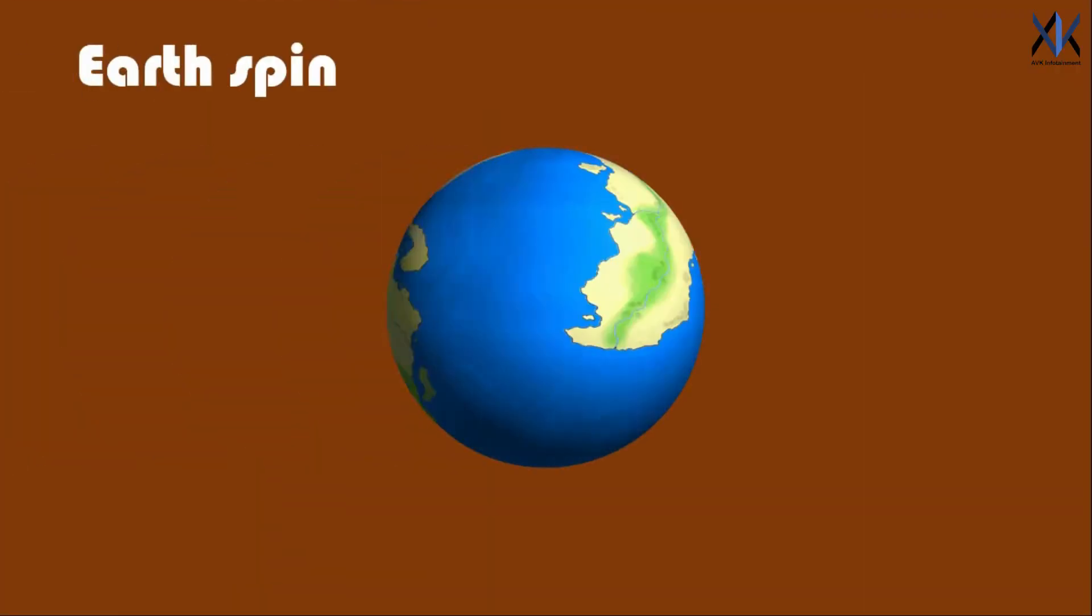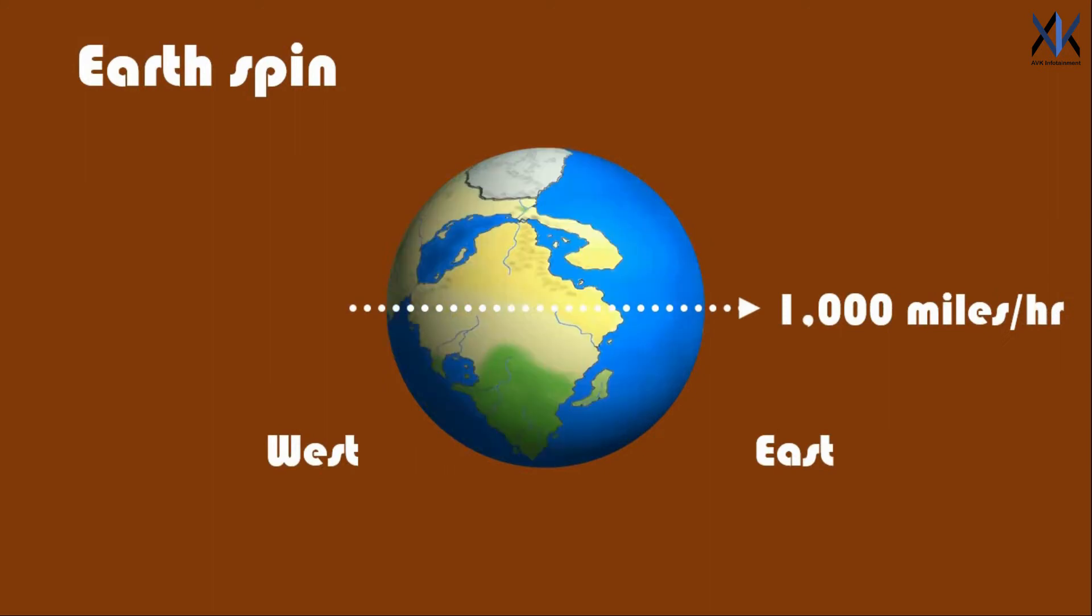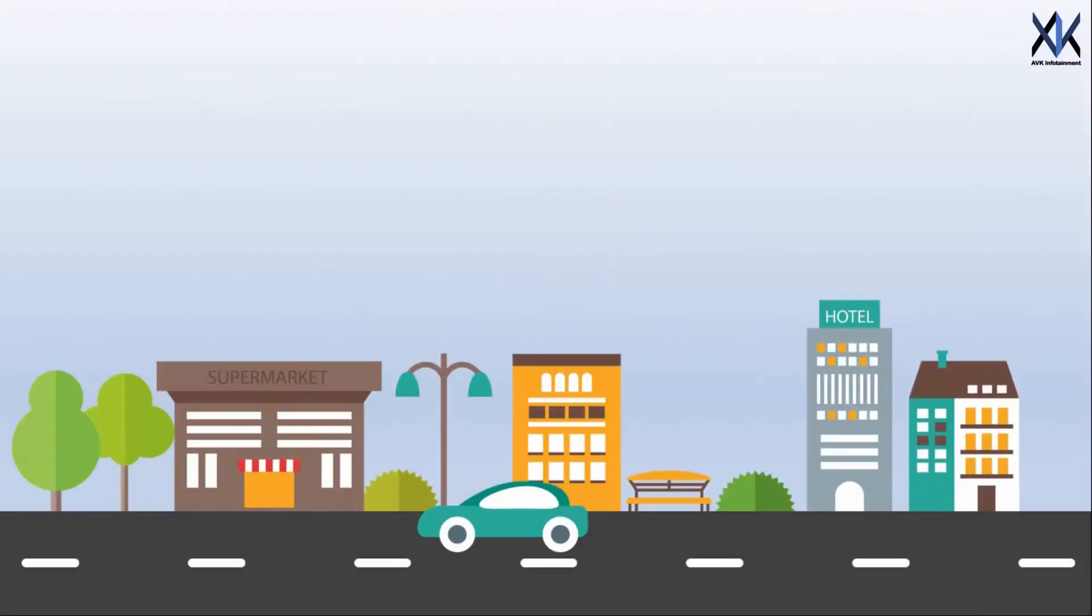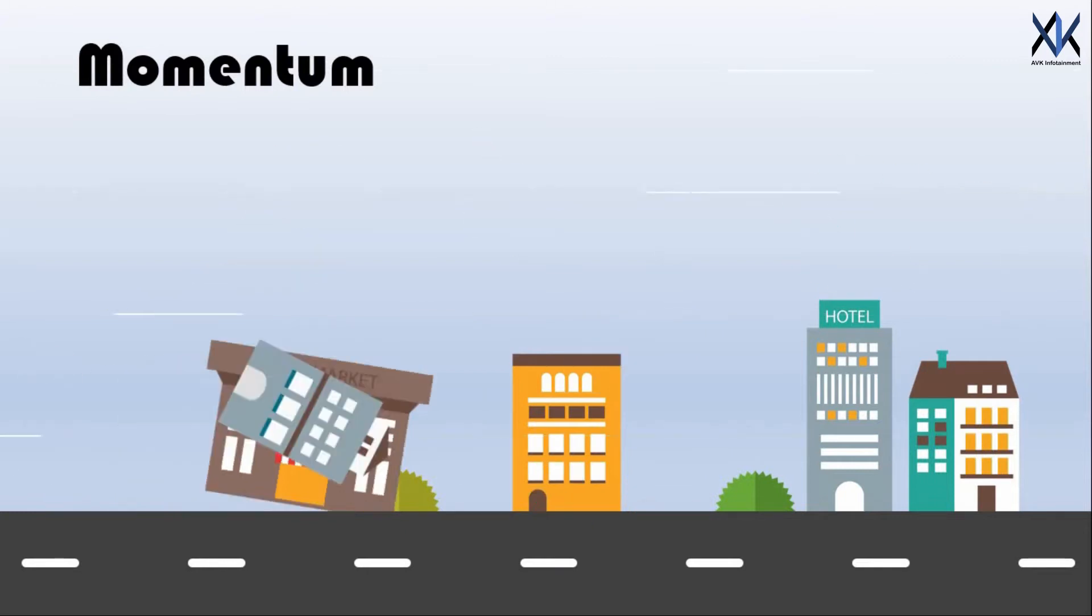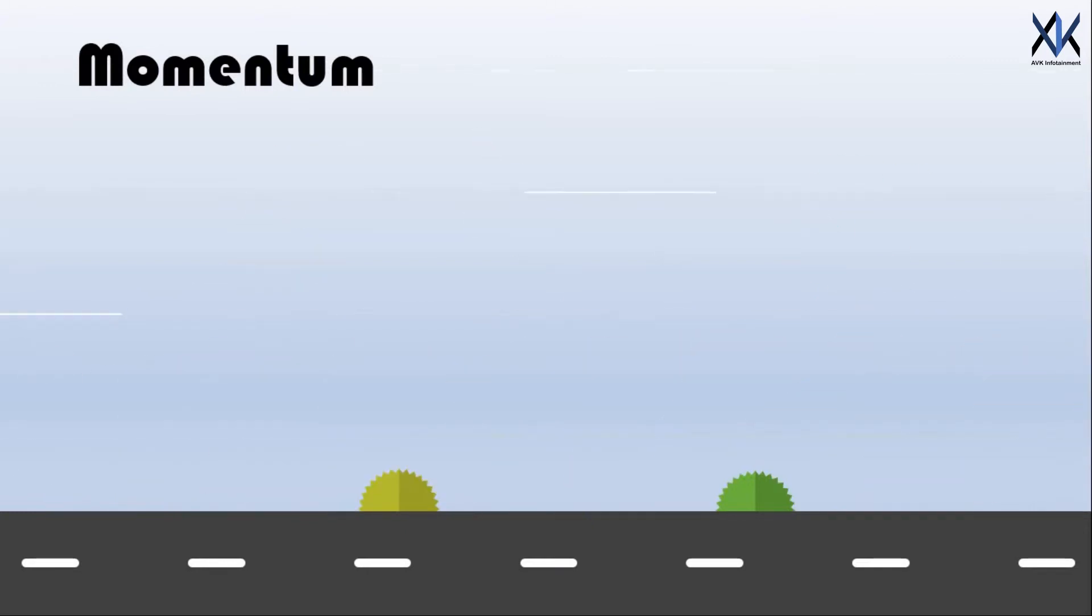Our Earth spins at 1000 miles per hour and if it stops suddenly then everything on the surface will be torn off from the ground and it will all fly east at a very high speed destroying and smashing everything on the way.